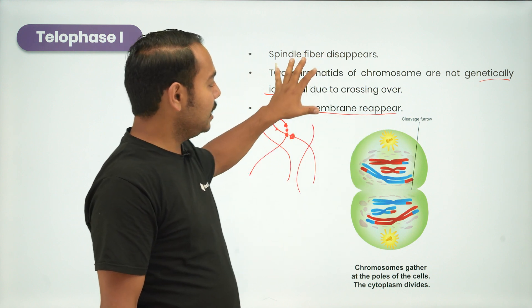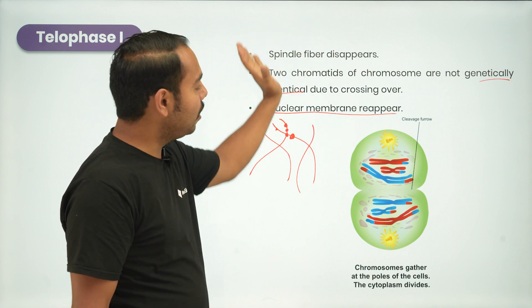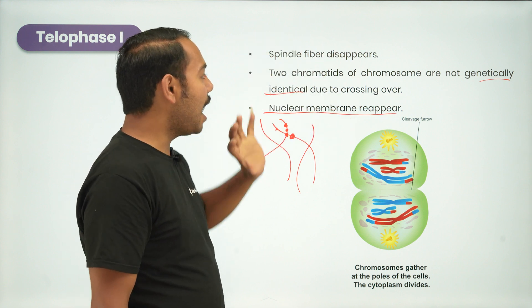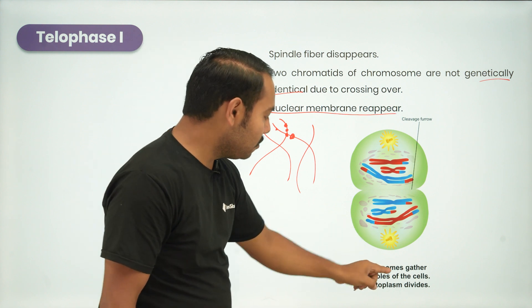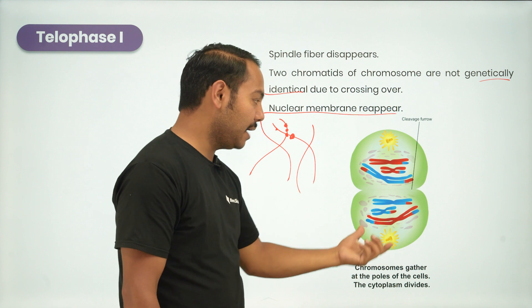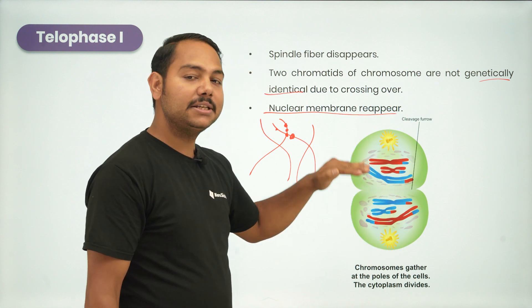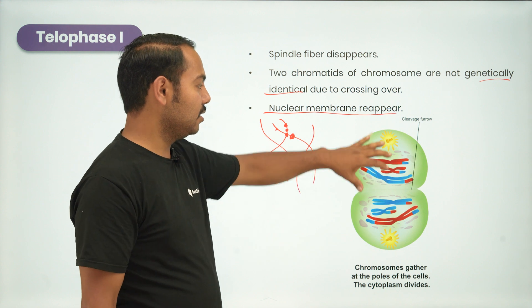What does this mean? In telophase I, there are spindle fibers disappearing, nuclear membrane reappears, and chromosomes gather at the pole of the cell, the cytoplasm divides, cytokinesis occurs, followed by resting stage.